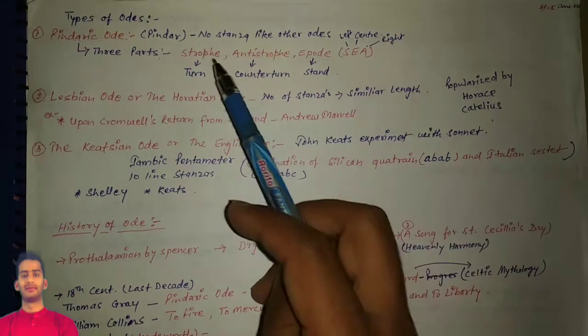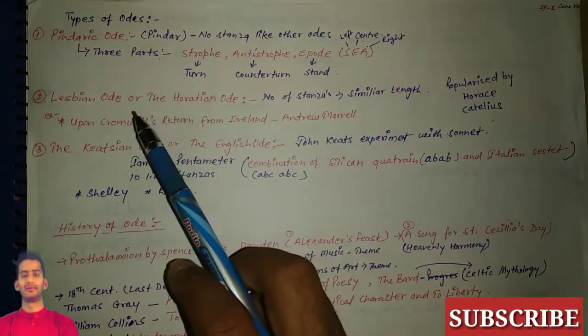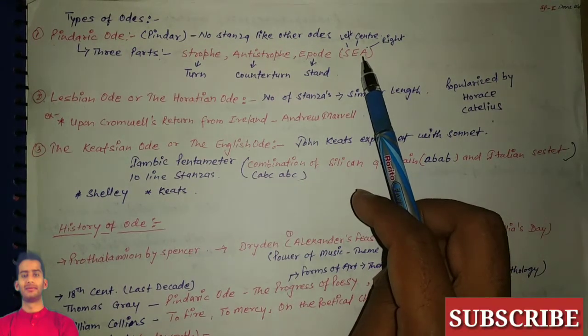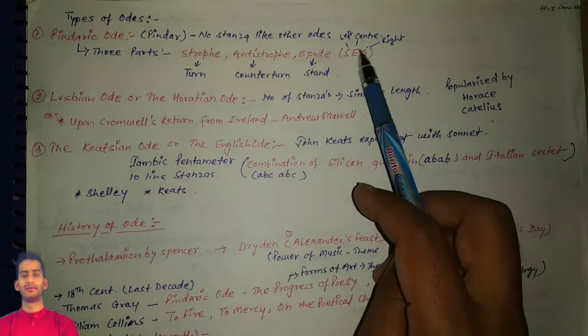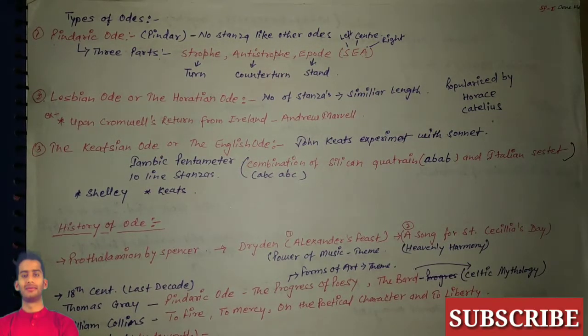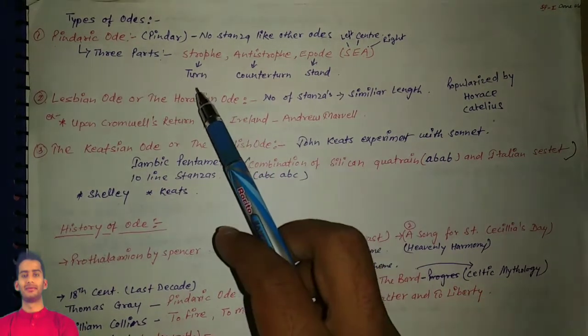In antistrophe, they go towards right, and in epode they stand still and remain in center. The meaning of strophe is turn, antistrophe is counter turn, and epode is stand.